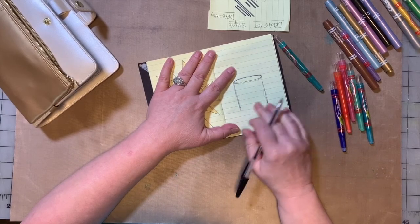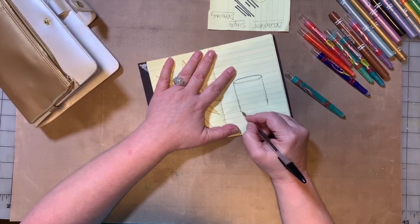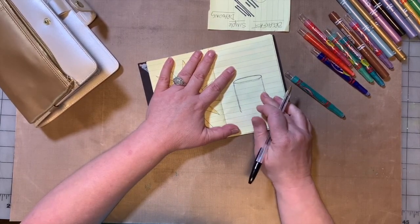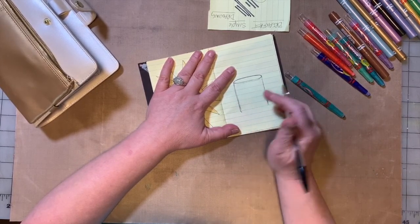You'll notice my lines are messy and sketchy. I'm good with that. If you're not, then you might want to do this in pencil first. And then you can go over the lines that you like in pen and then erase the pencil once the pen dries.